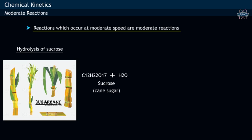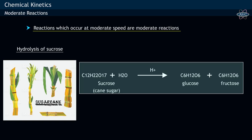Acid hydrolysis of sucrose, or cane sugar, resulting in the formation of glucose and fructose comes under this category, as it occurs at a moderate speed.